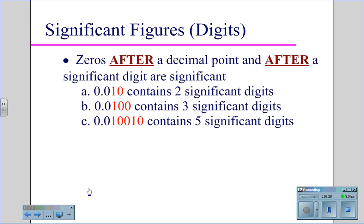Zeros after a decimal point and after significant digits become significant. So in 0.010, the first two zeros are placeholders and are not significant. The last zero is significant — two significant digits. In the number 0.0100, the first two zeros are not significant because they are placeholders. The last two zeros are significant. And for the number 0.010010, you have five significant digits.